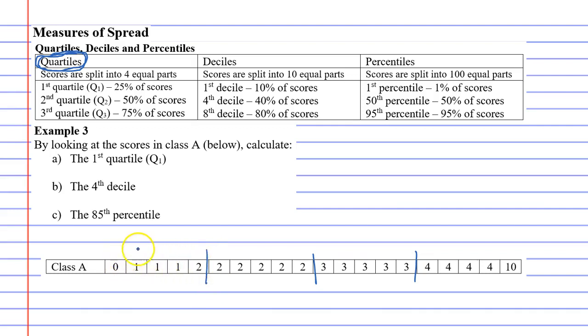And you'll notice that we've split it into one, two, three, four parts or four sections and each section has the same number of scores. It's got five scores.